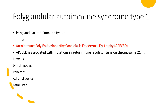Polyglandular autoimmune syndrome type 1 is also known as autoimmune polyendocrinopathy-candidiasis-ectodermal dystrophy, or APECED. APECED is associated with mutations in the autoimmune regulator gene on chromosome 21, and that will be affecting the thymus, the lymph nodes, the pancreas, the adrenal cortex, and fetal liver — indicating that children in the pediatric age group are not left out.